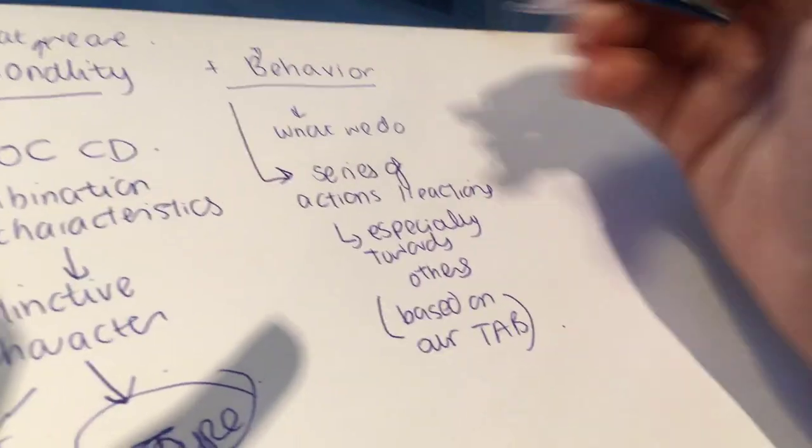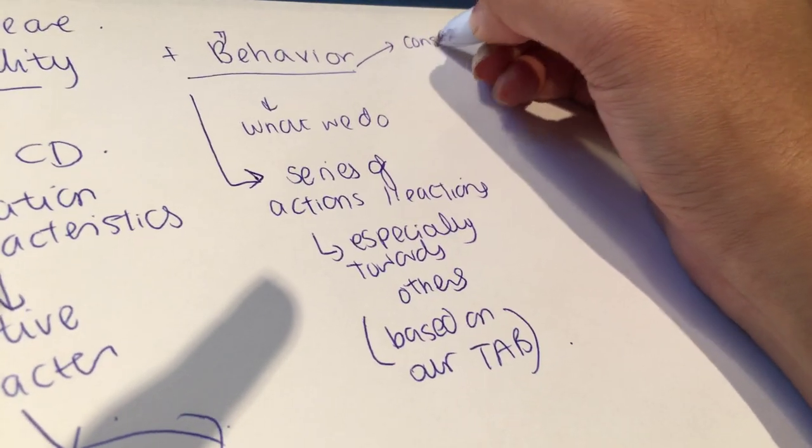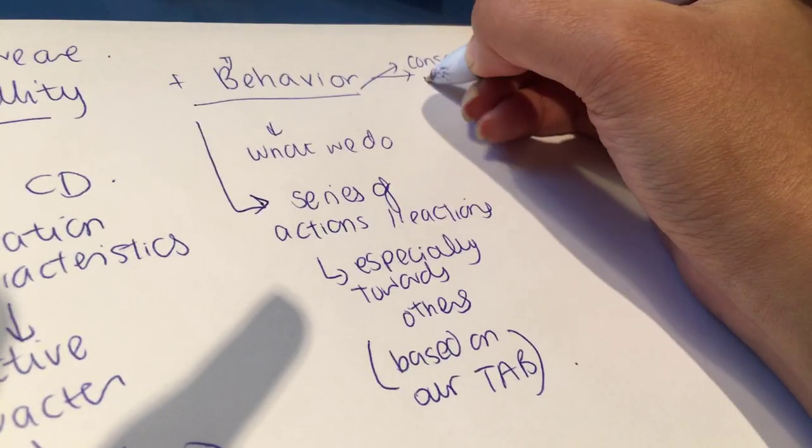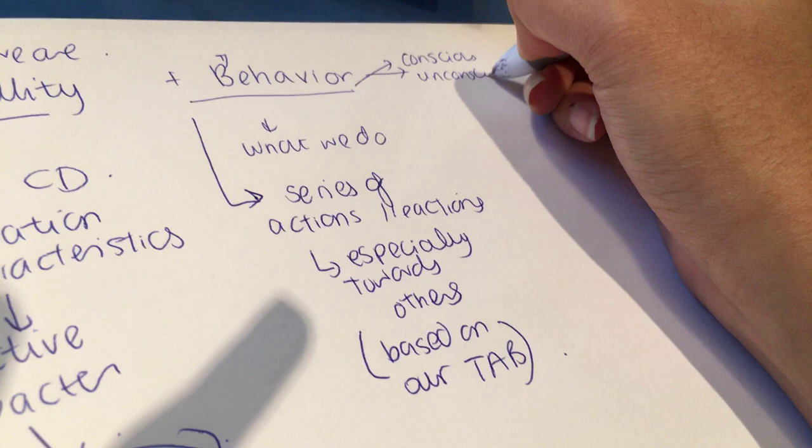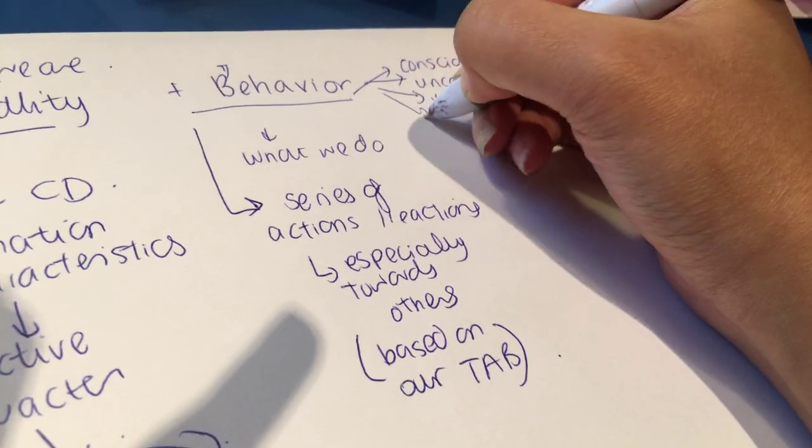And these are based on our TABs - thoughts, attributes, and beliefs. And by the way, behavior can be conscious, unconscious, voluntary, or involuntary.